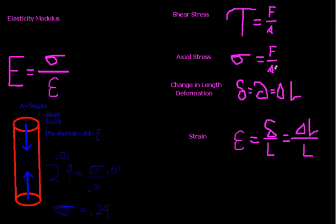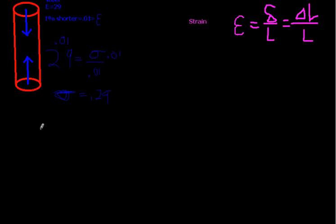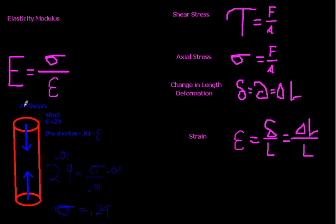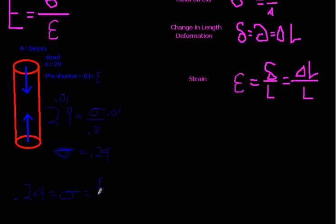And remember, sigma is the force divided by the area. And we know the area is 5 square inches. So, 0.29 is equal to sigma, which is equal to force over... We said the area is 5 inches, right? Area is 5 square inches. We get 5.